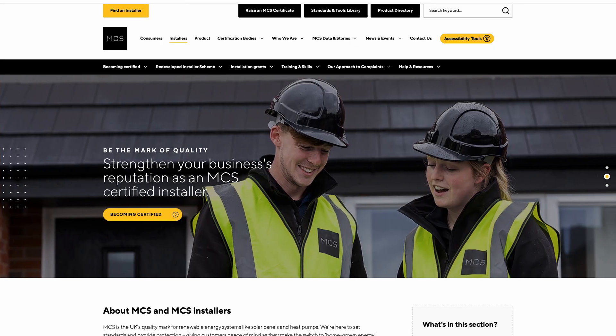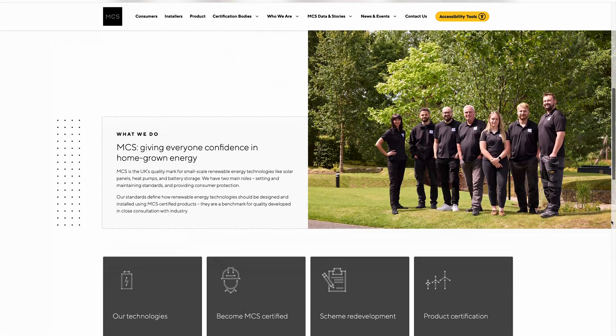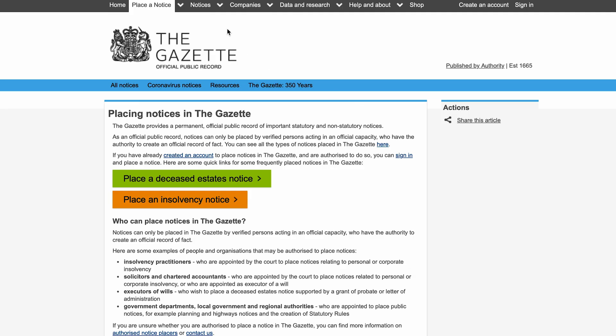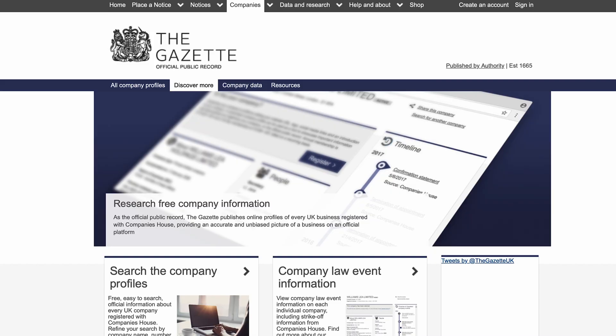Right now, there are over 5,000 registered installers on the MCS database. MCS only publish the numbers joining as registered installers. They don't have a library of failed or installers that have closed down. Aside from MCS, there's no public register that records any solar companies that go into liquidation. What we do have access to is the London Gazette. This is a national record for all companies that do go into administration.